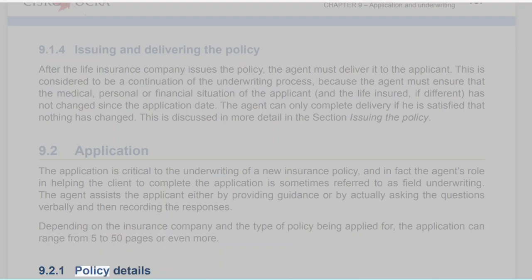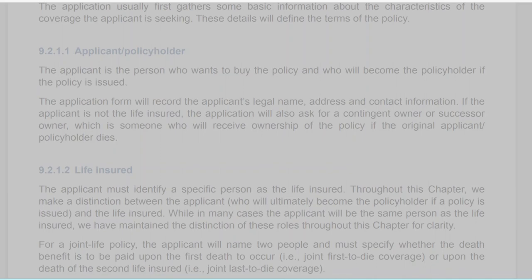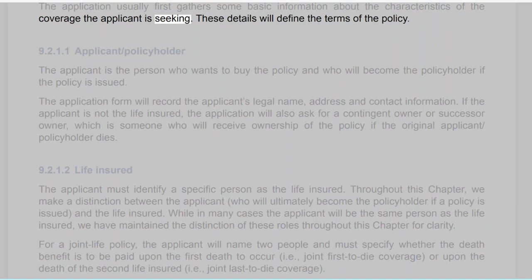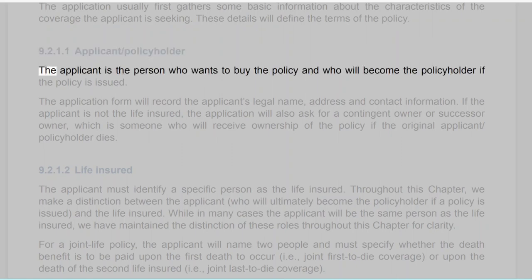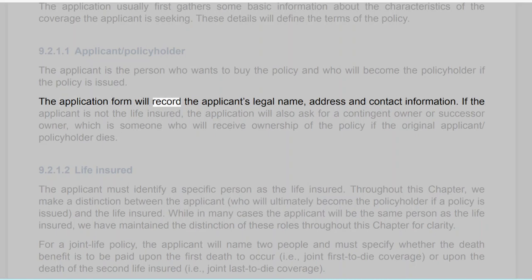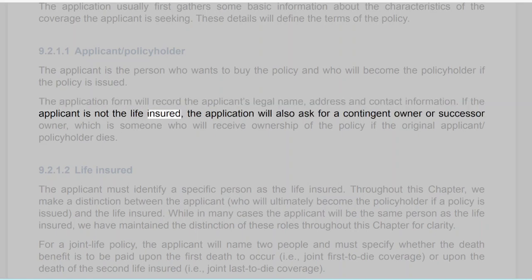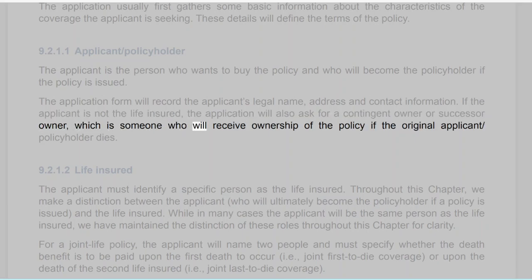Section 9.2.1: Policy Details. The application usually first gathers some basic information about the characteristics of the coverage the applicant is seeking. These details will define the terms of the policy. Section 9.2.1.1: Applicant/Policyholder. The applicant is the person who wants to buy the policy and who will become the policyholder if the policy is issued. The application form will record the applicant's legal name, address, and contact information. If the applicant is not the life insured, the application will also ask for a contingent owner or successor owner — someone who will receive ownership of the policy if the original applicant/policyholder dies.